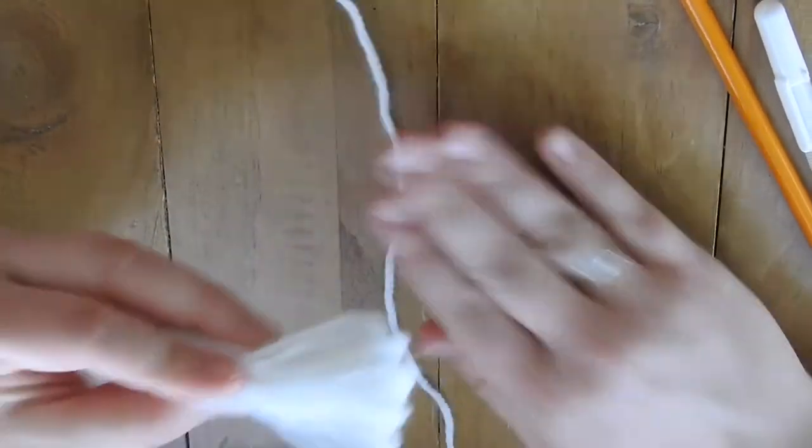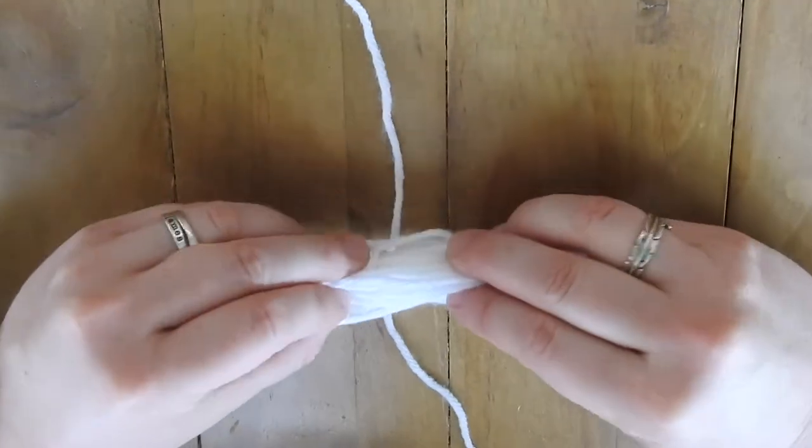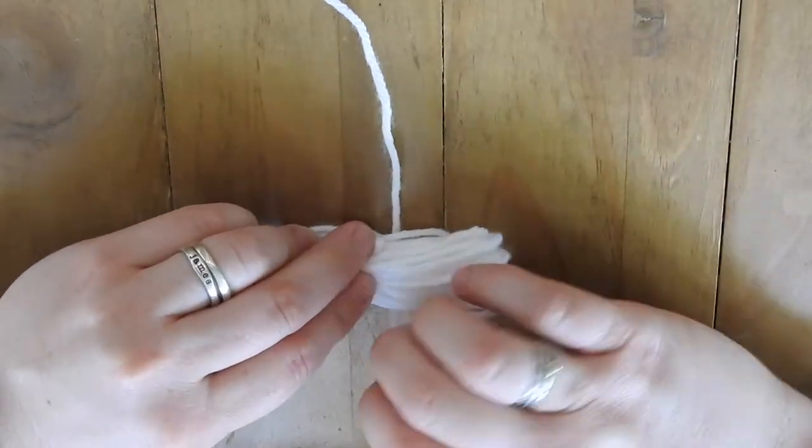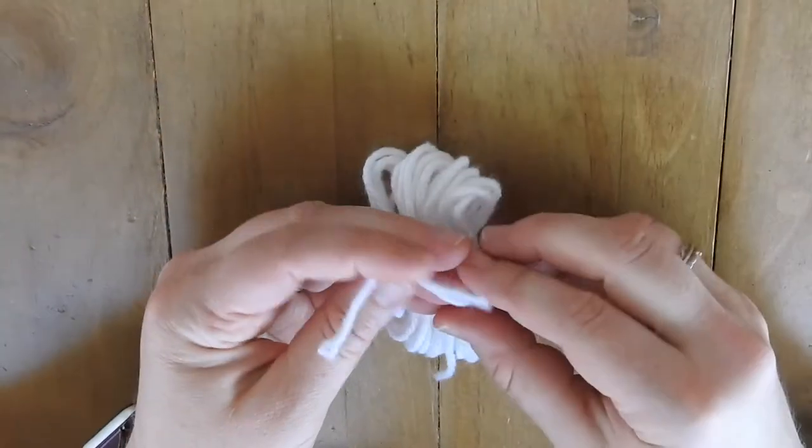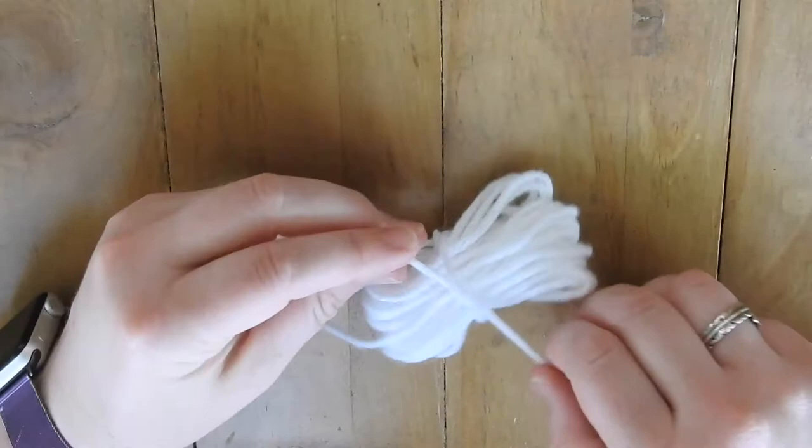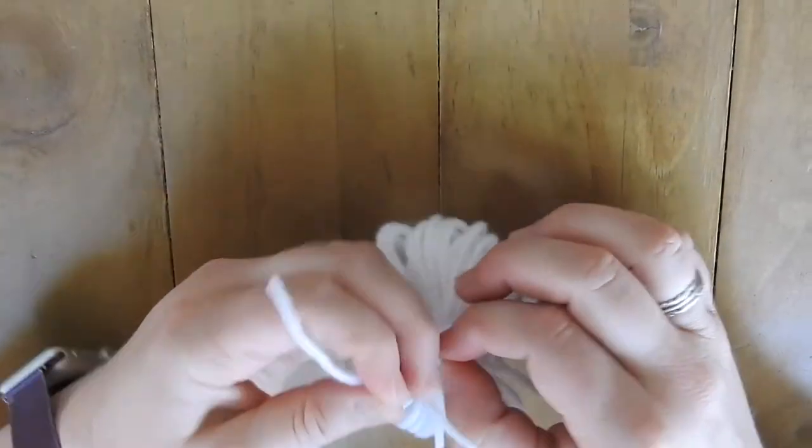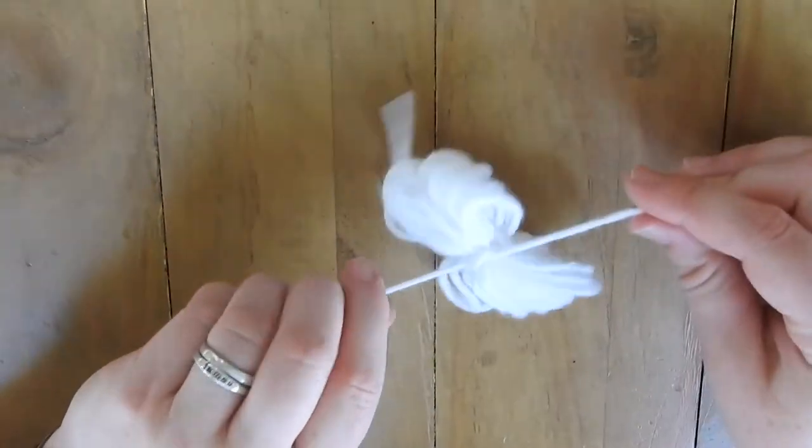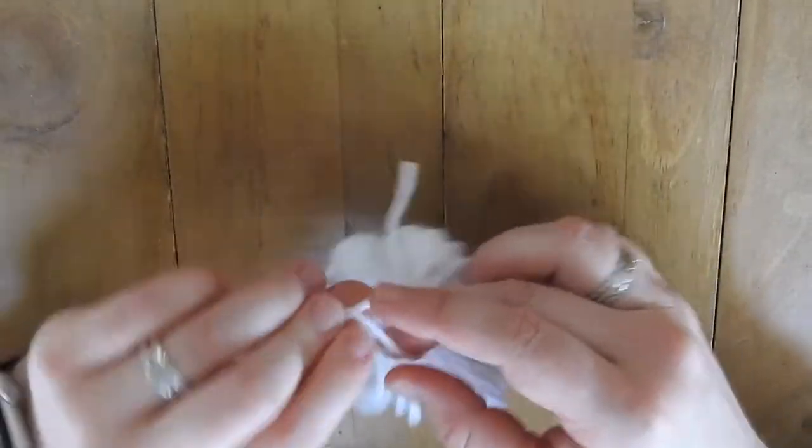Then we're going to go ahead and tie that small piece of yarn in a knot. I would do at least two or three ties as tightly as you can, because this is what's going to be holding the threads together - this knot right here. I'm doing about three ties.